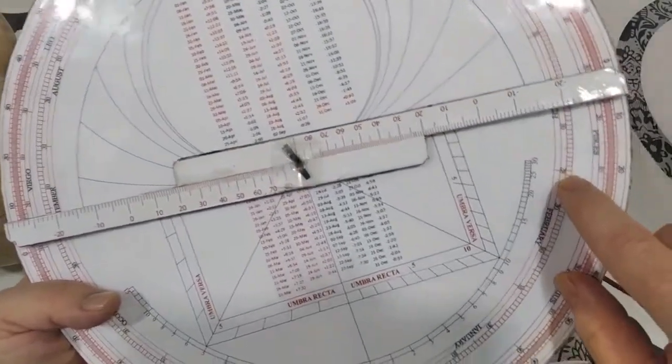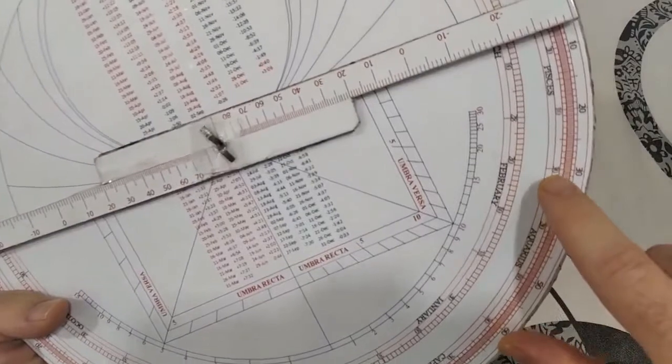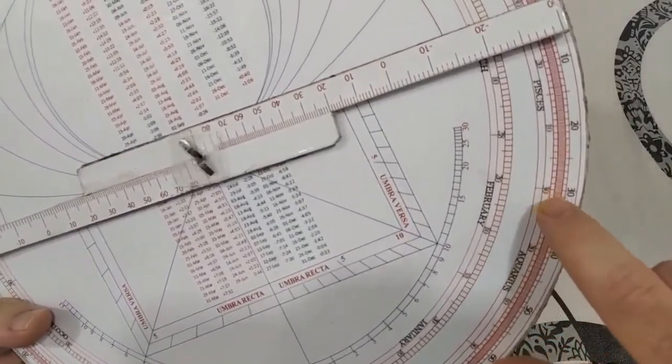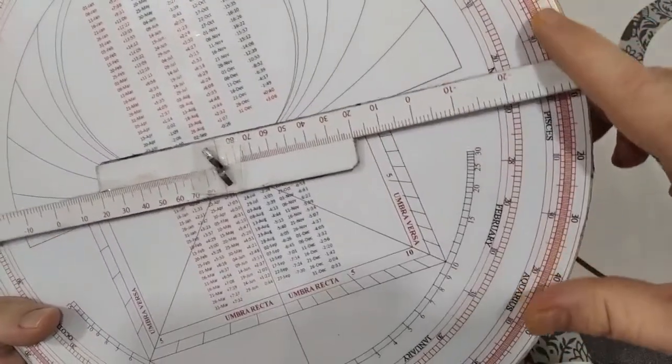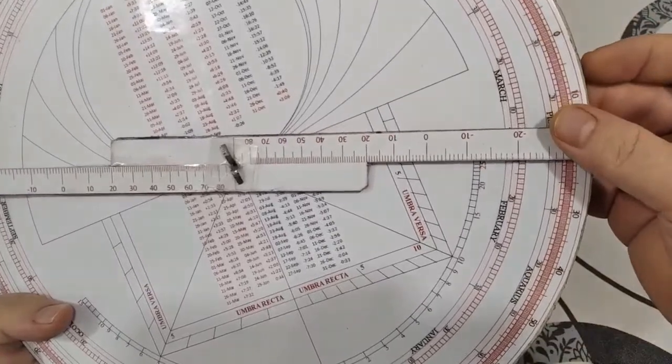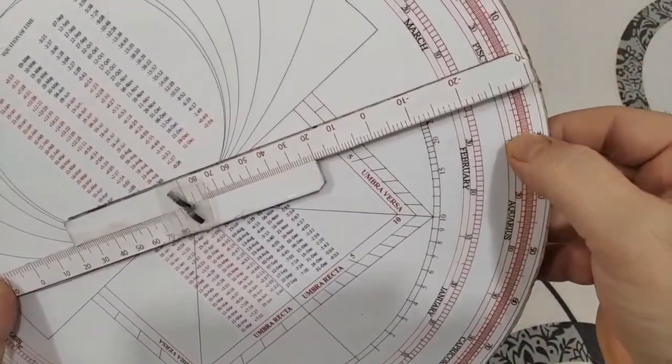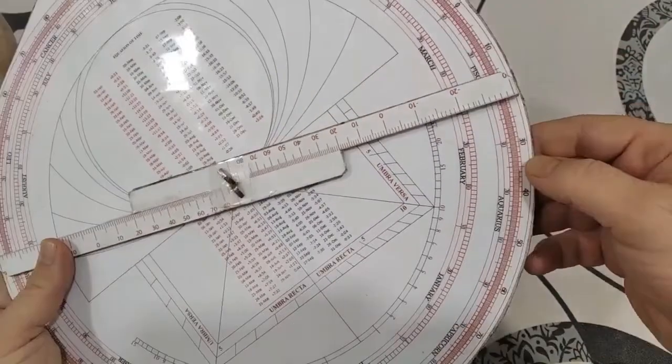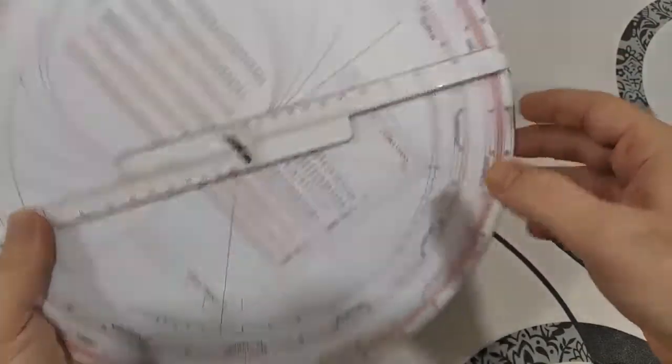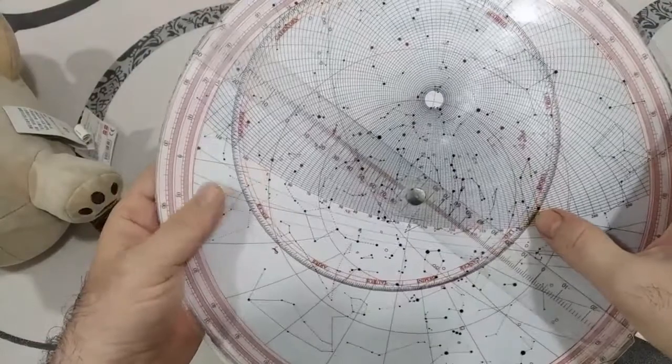Let's find the sunrise and sunset for February 27th. To do that, first find the longitudinal sun for February 27th. It is 8th degree of Pisces. Now rotate the rete so that Pisces is near the horizon. This is end of Aquarius.